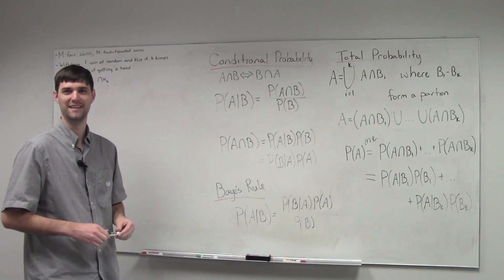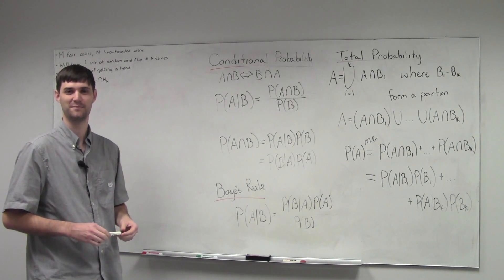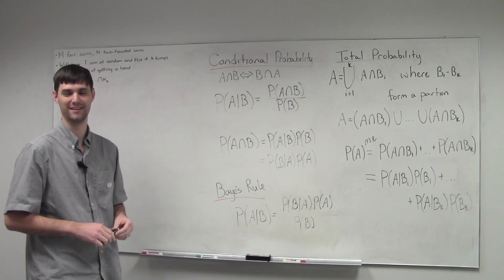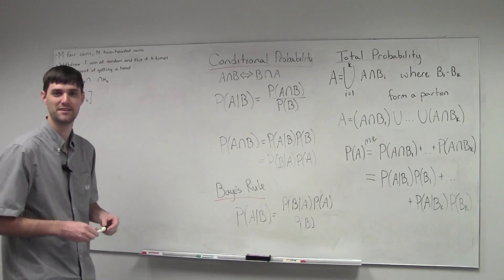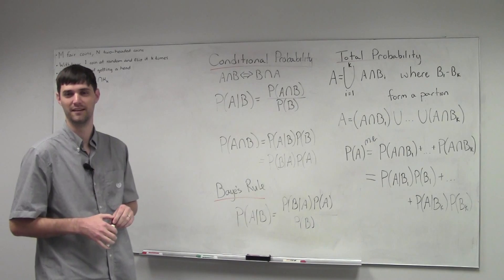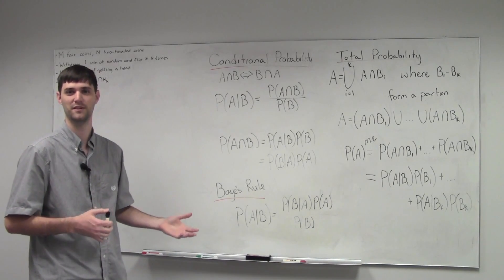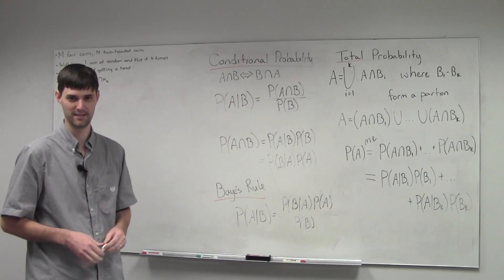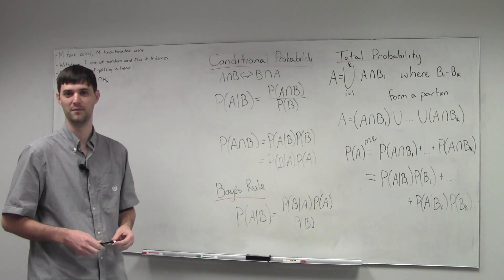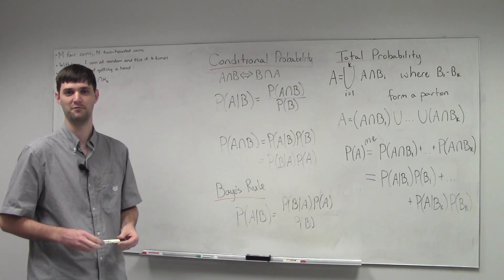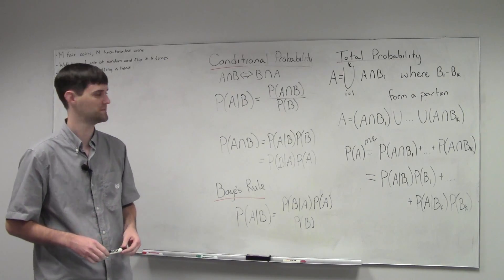Hey there. We're going to be introducing some fundamental concepts of probability using a simple example. That example is: given a collection of coins — a certain number of fair coins and a certain number of two-headed coins — what is the probability that we drew a fair coin if we see a given number of heads as our outcomes?